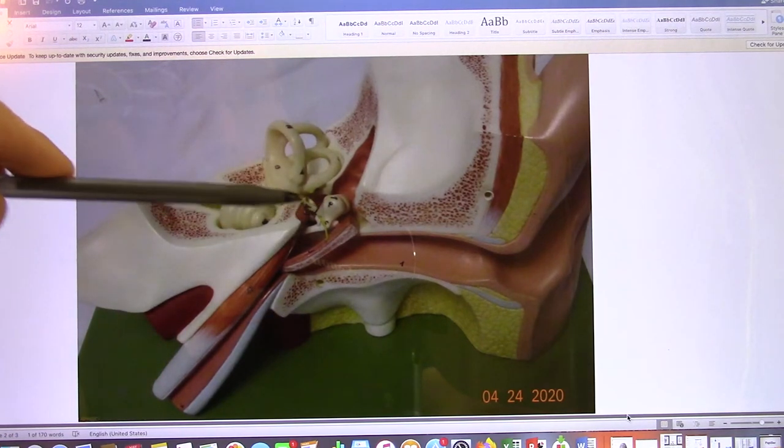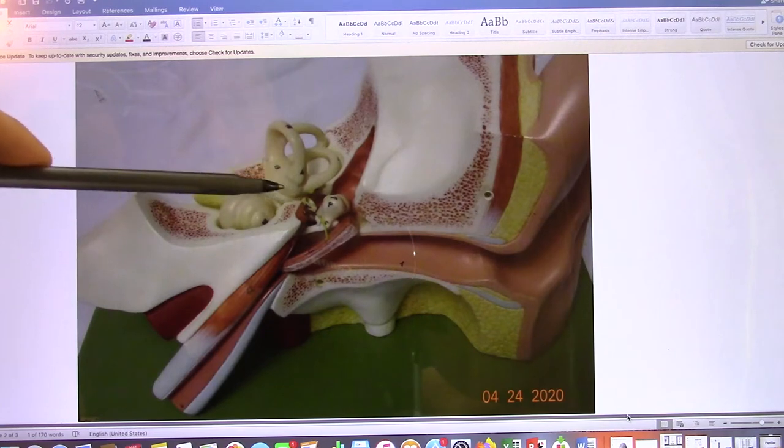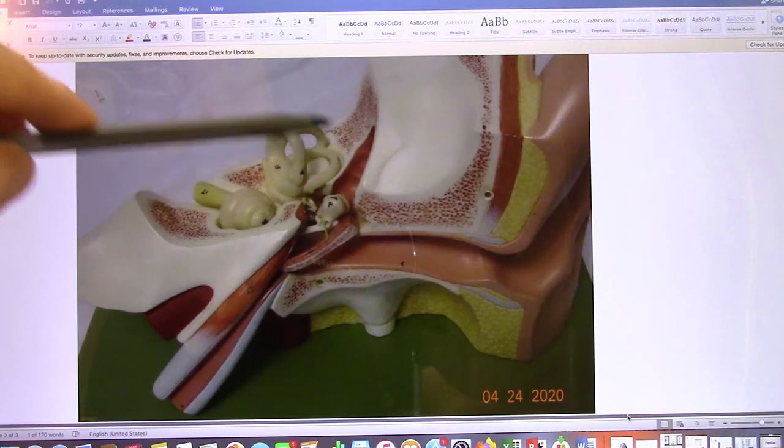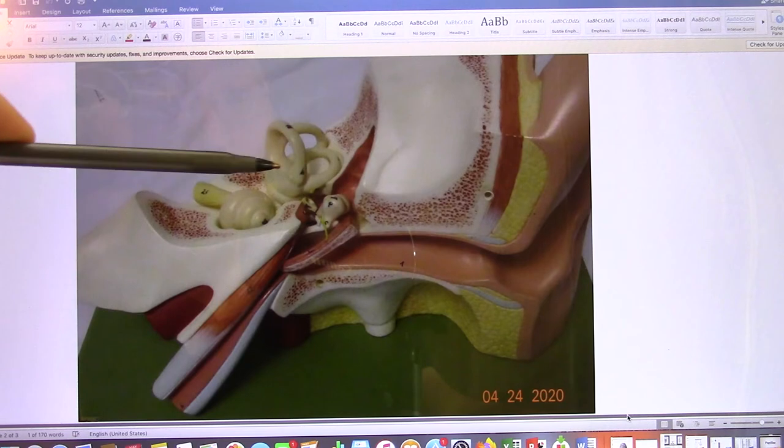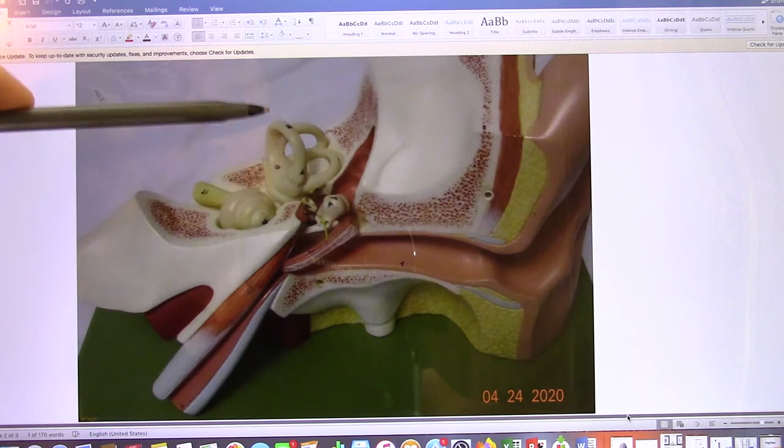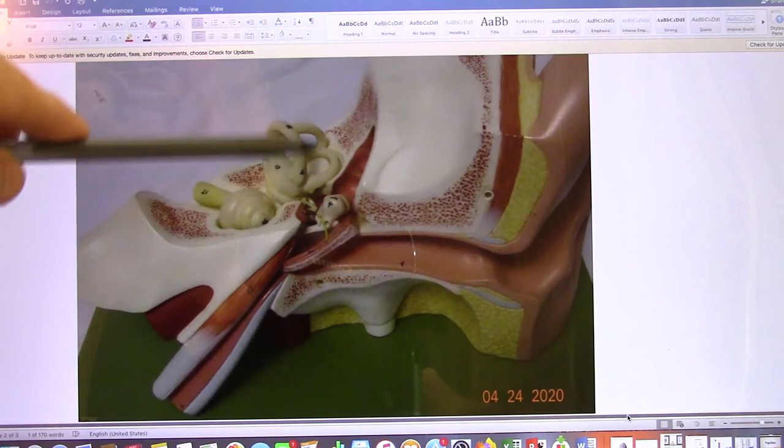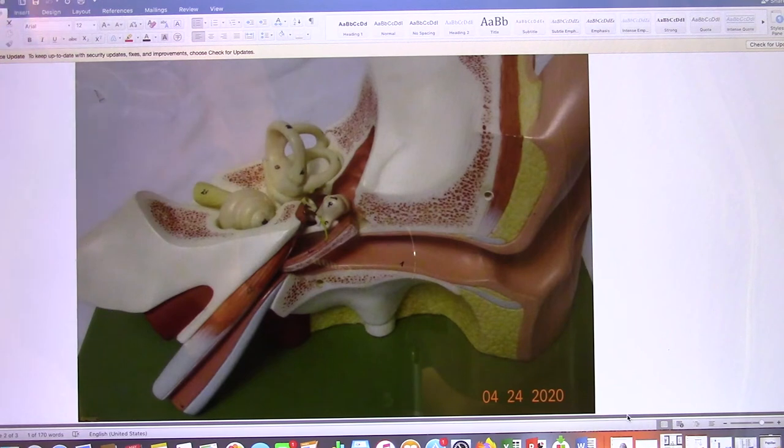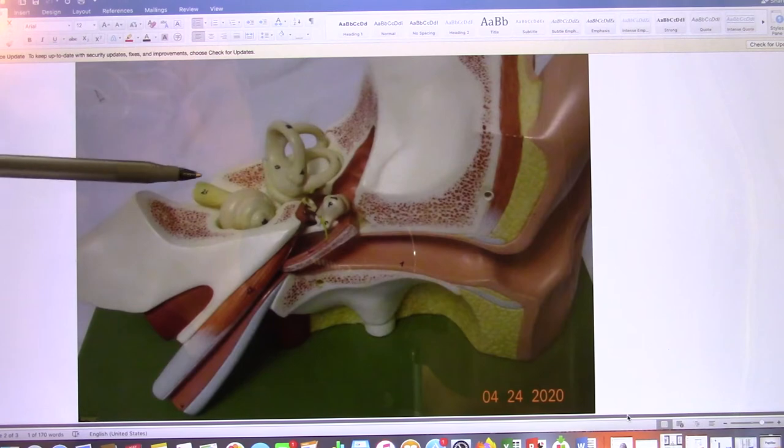And the three ossicles connect to the cochlea. And this part, that's the inner ear. So your inner ear, you have the cochlea, you have the vestibule, you have the semicircular canal, and that's the inner ear. And that's your vestibulocochlear nerve. So they have the vestibule branch and the cochlear branch combined together, cranial nerve number eight.